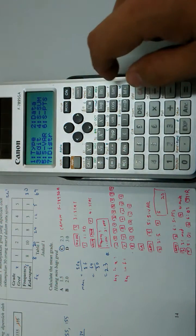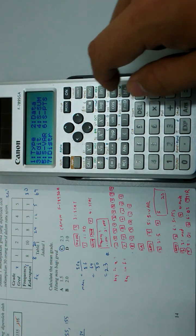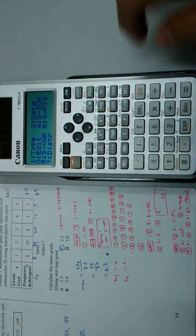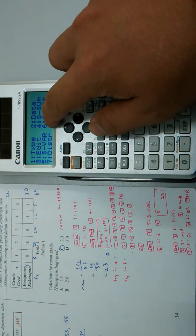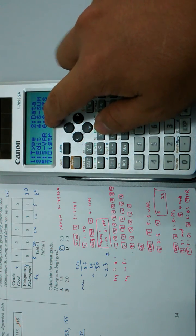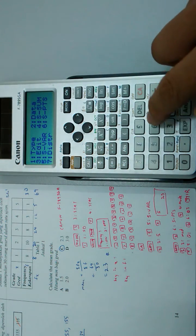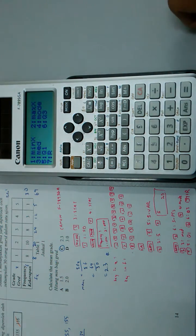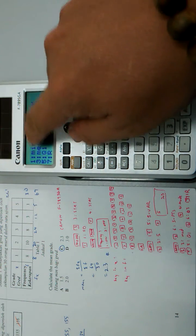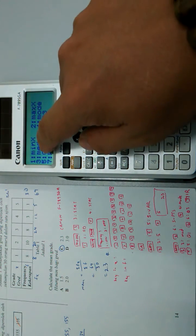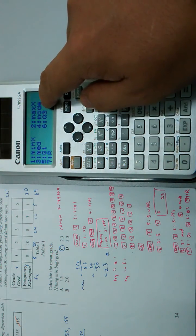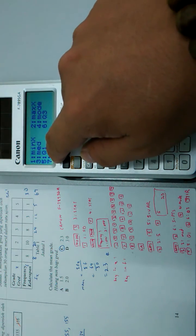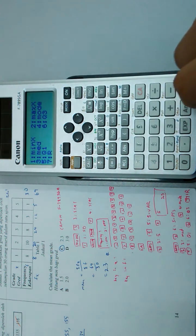I can also find the value of median and mode by pressing Apps, then number 6, statistic point. This shows minimum, maximum, median, mode, first quartile, third quartile, and range.